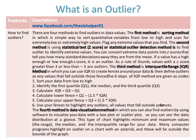The third method is the interquartile range (IQR) method, in which you use the IQR to create fences around your data and then define outliers as any values that fall outside those fences. The six steps of the IQR method are: step one, sort your data from low to high; step two, identify the first quartile Q1, the median, and the third quartile Q3.